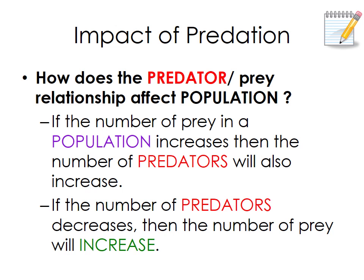How does the predator-prey relationship affect population? If the number of prey goes up, predators are more likely to move into the area because there's more food, so the predator population will also go up. But if the predator population goes down, the prey population will go up because they're no longer being hunted in high numbers.